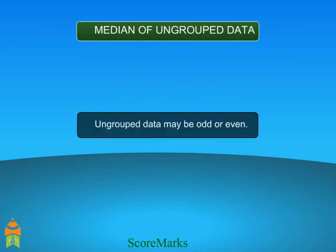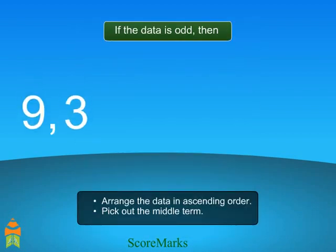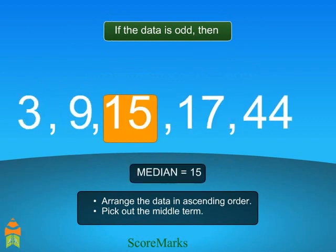We know that ungrouped data may be odd or even. If the data is odd, then arrange the data in ascending order. Pick out the middle term. This is the median.